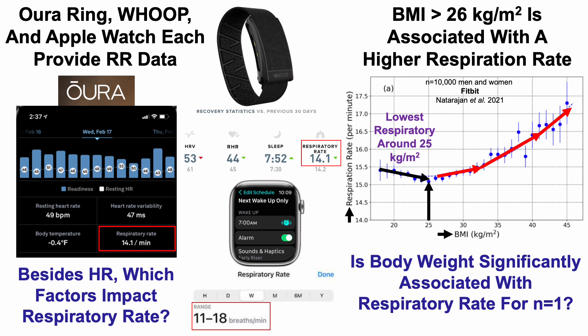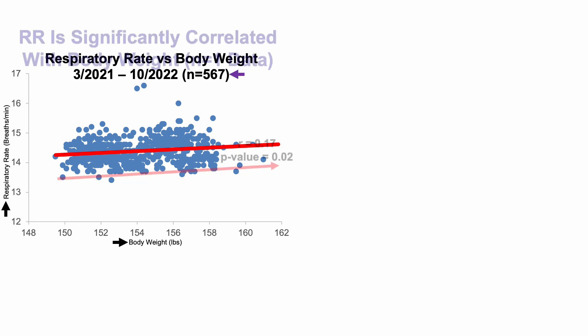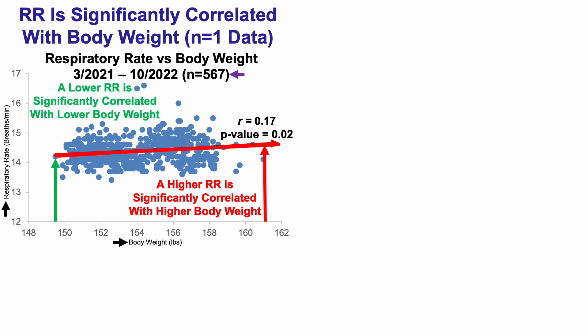This raises the question: is body weight significantly associated with respiratory rate at the individual level? Looking at my own respiratory rate data over the last 567 days — plotted against body weight, with daily morning weigh-ins — covering March 2021 through October 2022, the respiratory rate is significantly correlated with body weight in my own data, with a correlation coefficient of 0.17 and a significant p-value of 0.02. Although that's a weak correlation, it is still statistically significant, suggesting a higher respiratory rate corresponds to higher body weight, and conversely, a lower respiratory rate corresponds to lower body weight — at least in my data.